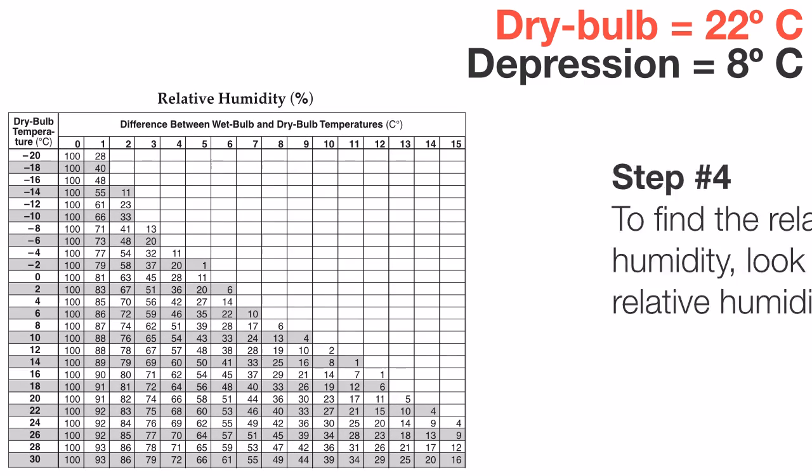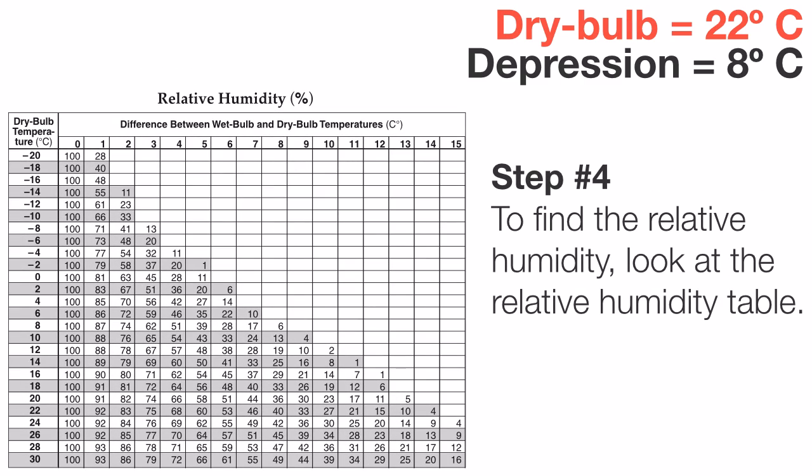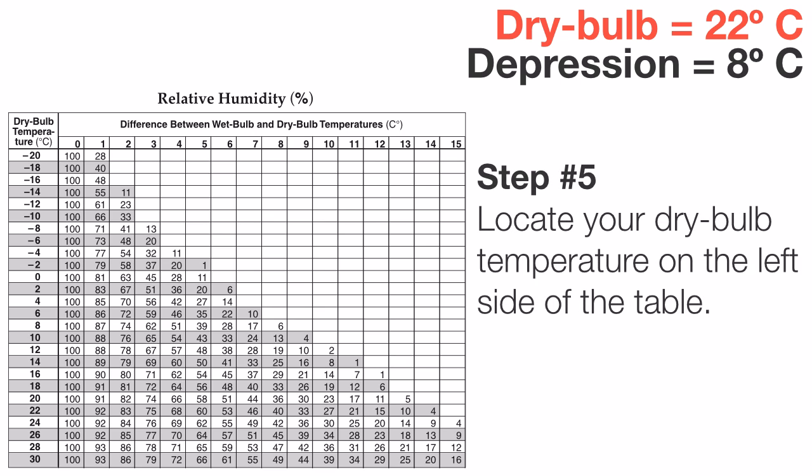Like I said, we'll start with the humidity. So we need to look at our humidity chart and what we're going to do is we're going to begin by looking at the left hand column on this chart where it says dry bulb temperature. Our dry bulb is 22 degrees Celsius, so we're going to locate that on the left and just kind of mark off that row as I did in green here.